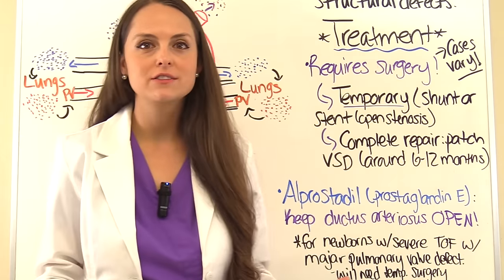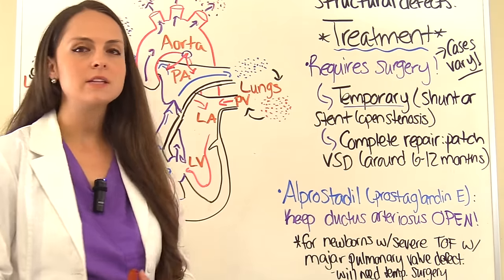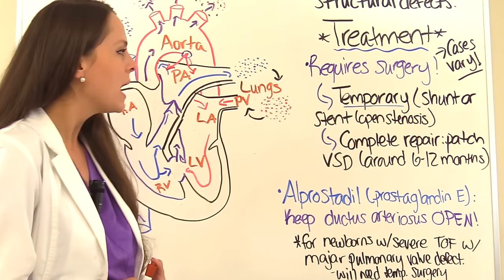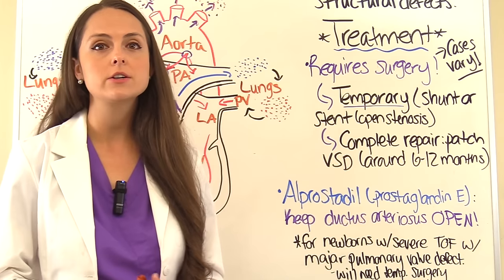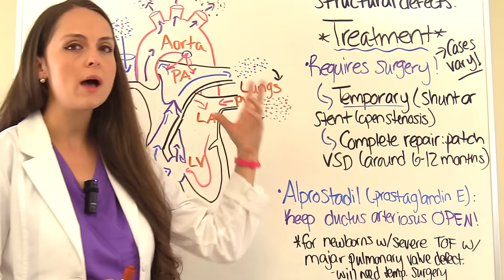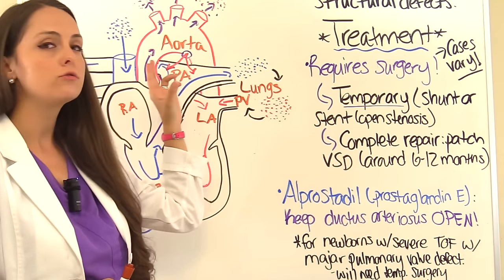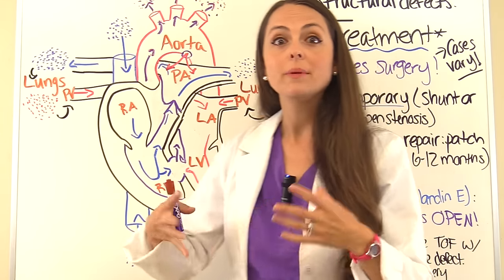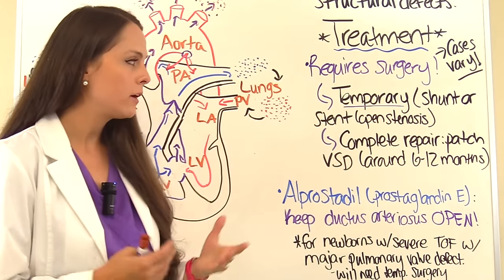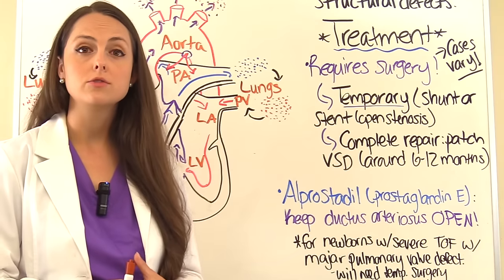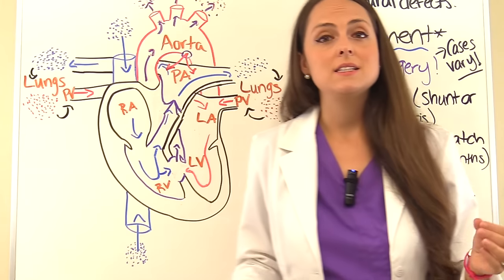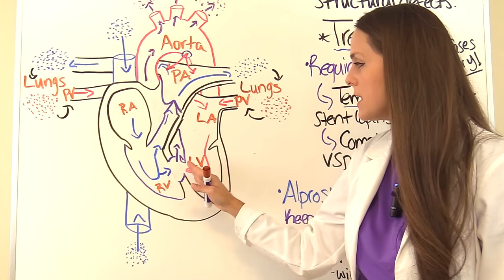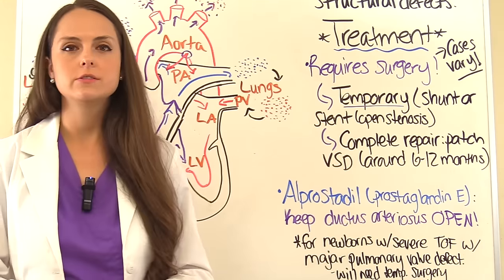Treatment requires surgery to correct the structural defects. Cases vary in severity. A temporary palliative surgery may be performed for very young patients, where a shunt is placed to increase pulmonary blood flow to the lungs, or a stent is placed to open the narrowing of the pulmonary artery and pulmonic valve. Complete repair is usually done around 6 to 12 months of age, when a patch is placed to correct the ventricular septal defect and prevent blood mixing.